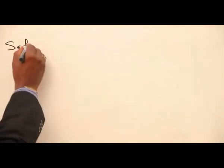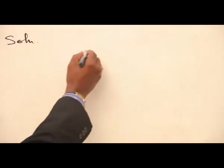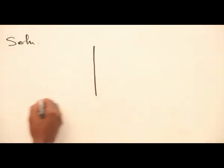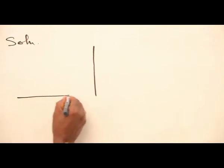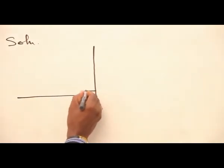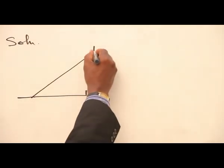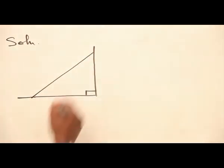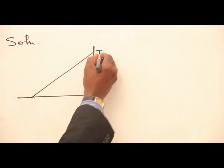Solution. Let's sketch the diagram. Here is the wall, here is the ground, and the wall and the ground are perpendicular, that is they make an angle of 90 degrees. Here is the ladder to a point, call it point T on the wall.